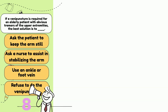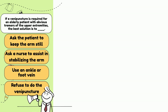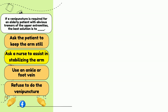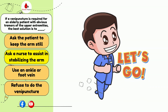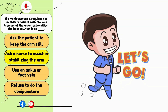If a venipuncture is required from an elderly patient with obvious tremors of the upper extremity, the best solution is to: ask the patient to keep the arms still, ask a nurse to assist in stabilizing the arms, use an ankle or foot vein, or refuse to do the venipuncture for the patient's safety. The answer is B: ask a nurse to assist in stabilizing the arms. Equipment should be chosen carefully to avoid unnecessary trauma and a prolonged venipuncture process.